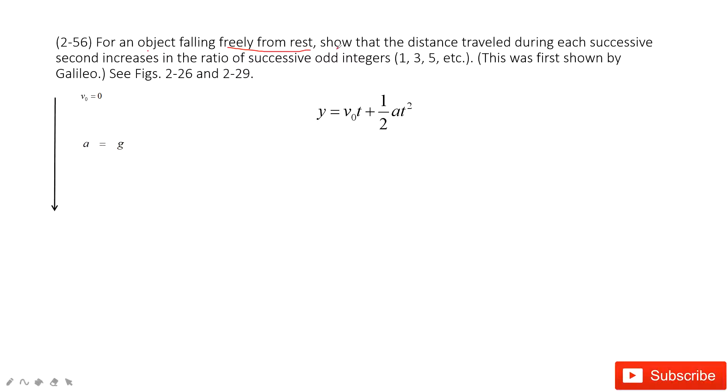This one shows the distance traveled during each second increases in the ratio of successive odd integers. So now we can see for the free fall body, we know the initial velocity and we know the acceleration.